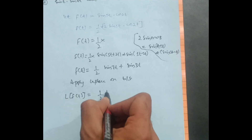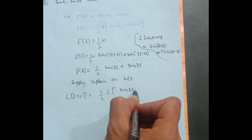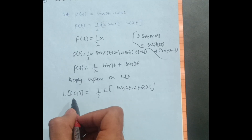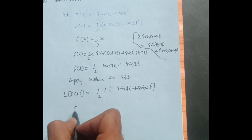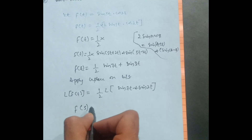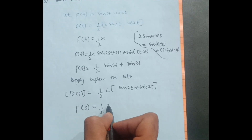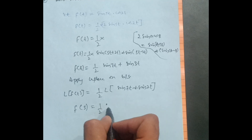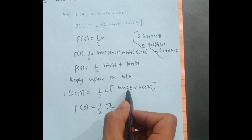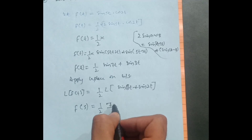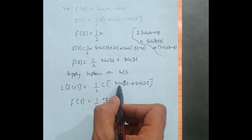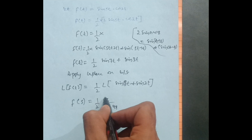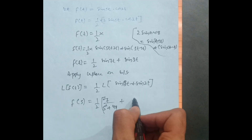Applying Laplace on both sides, L{f(t)} equals (1/2) times the Laplace of [sin(7t) + sin(3t)]. When you apply the Laplace transform, the function gets converted into a function of s. So F(s) = (1/2) times the Laplace of sin(7t), which becomes 7 upon s squared plus 7 squared, that is 49.